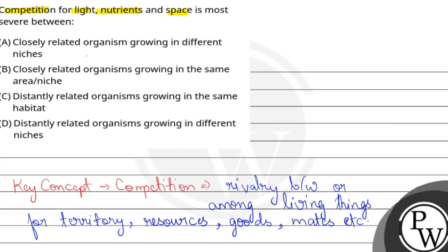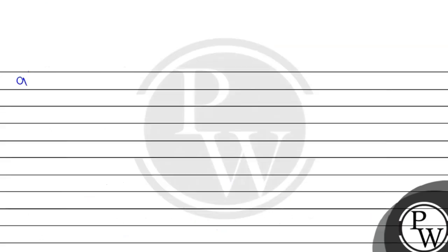If there is competition between them, then which situation will be severe? First of all, closely related organisms growing in different niches. Suppose that organism A is in place A and this is place B.